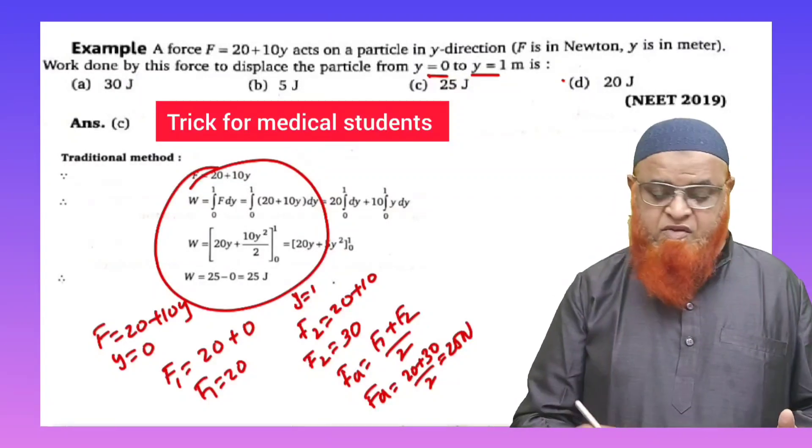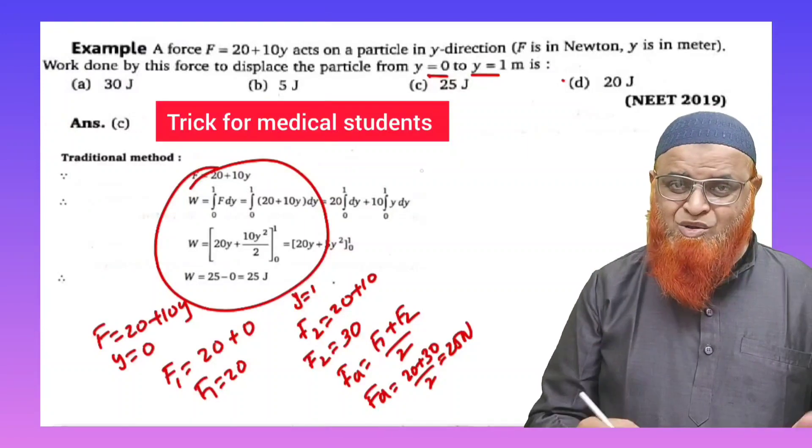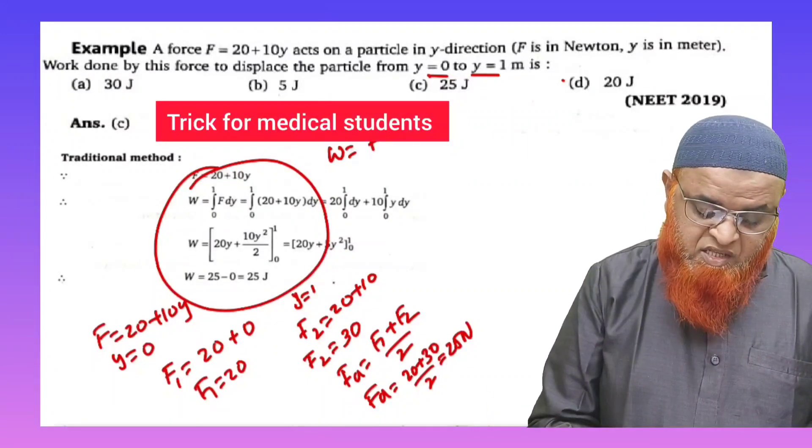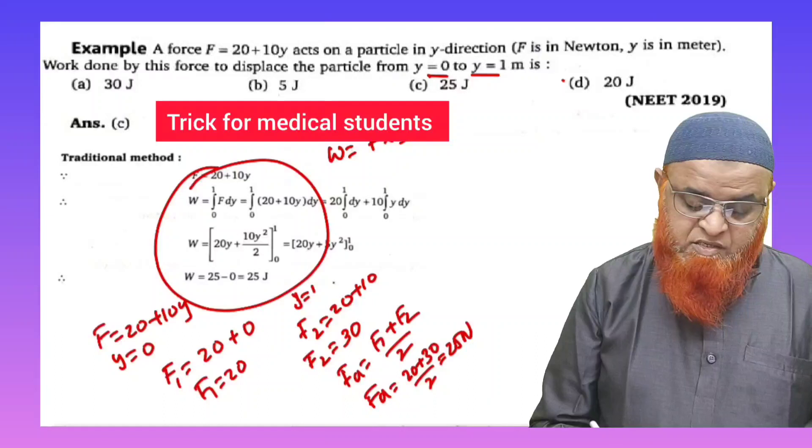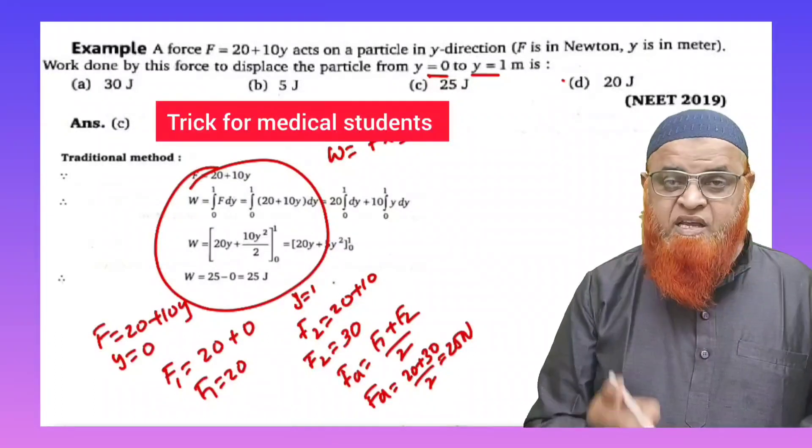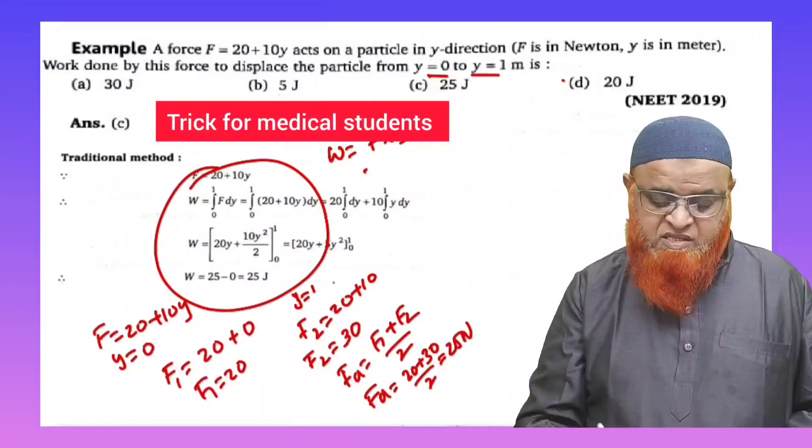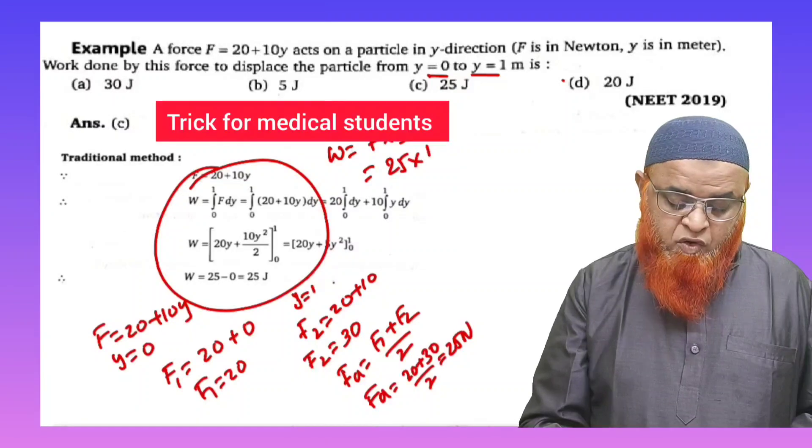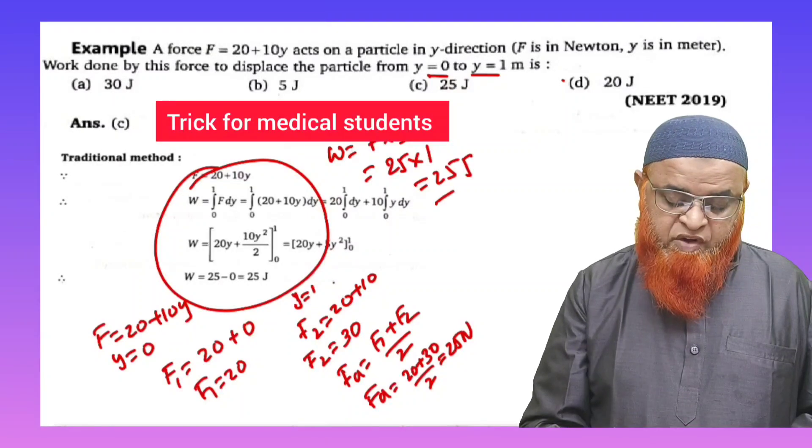But how are you going to find out the work done here? He's asking us to find out the work done. So work done W is nothing but force into displacement. And you know that displacement is 0 to 1, that means 1 meter is a displacement here. Therefore 25 into 1 is nothing but 25 joules.